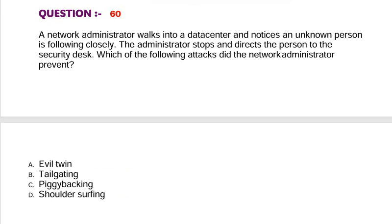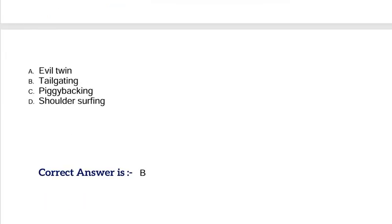Question: A network administrator walks into a data center and notices an unknown person is following closely. The administrator stops and directs the person to the security desk. Which of the following attacks did the network administrator prevent? Option A, Evil Twin. Option B, Tailgating. Option C, Piggybacking. Option D, Shoulder Surfing. Correct answer is Option B.